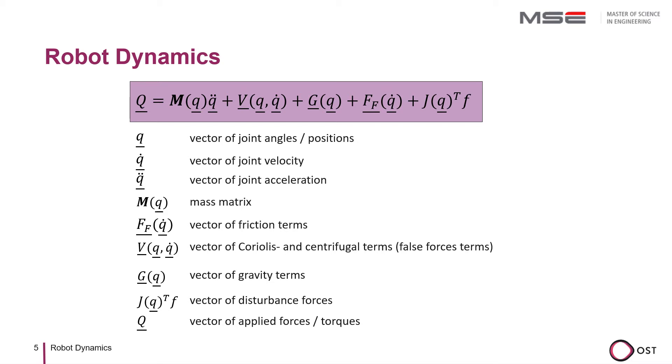Lagrangian mechanics is often used to derive the specific equation for a particular robot. However, how to find the terms in this equation as easily as possible is highly dependent on your robot kinematics. In this video, we will only discuss our mobile robot.